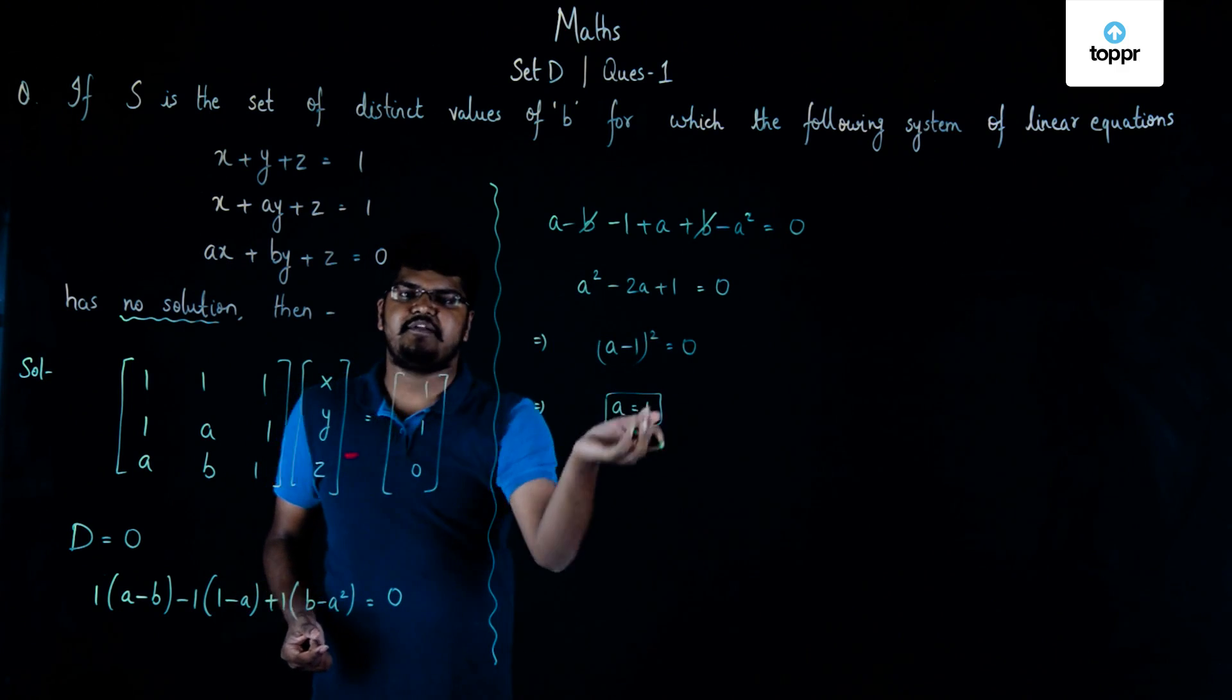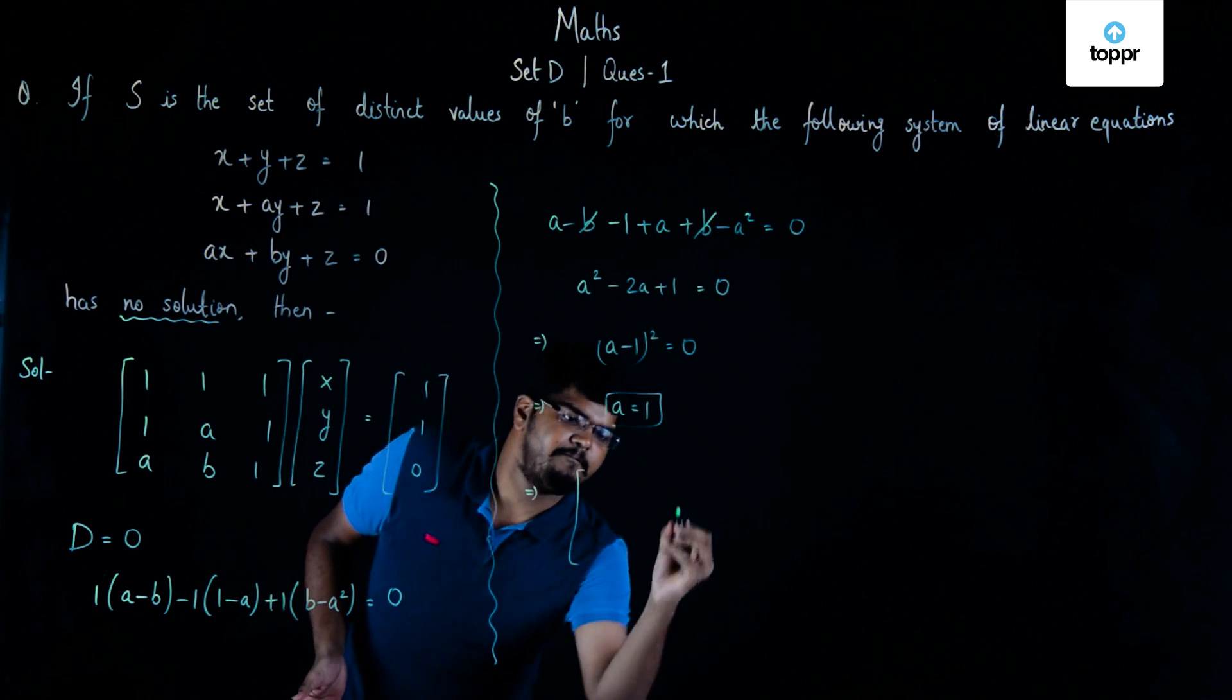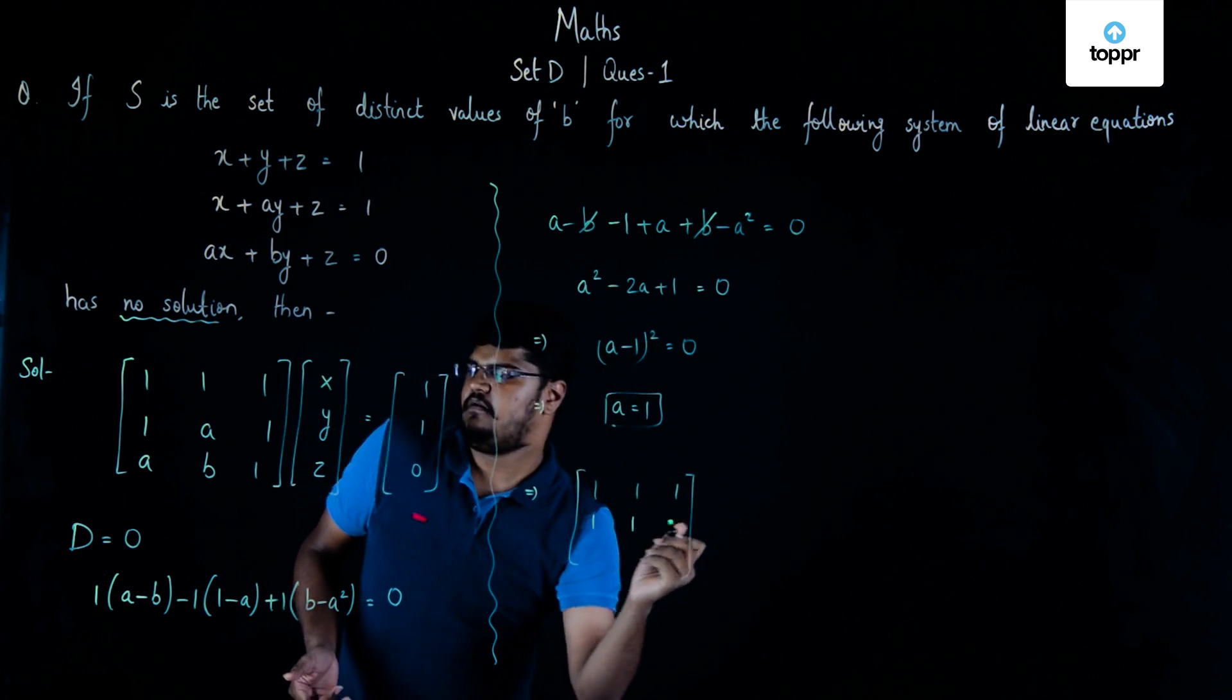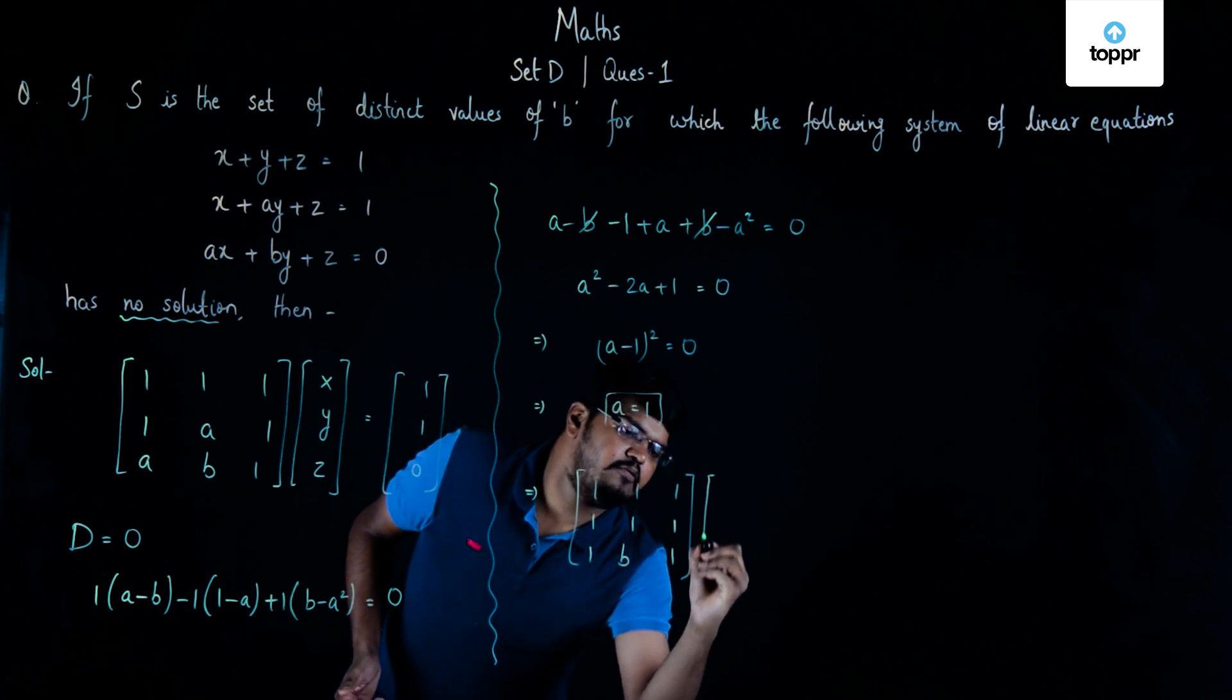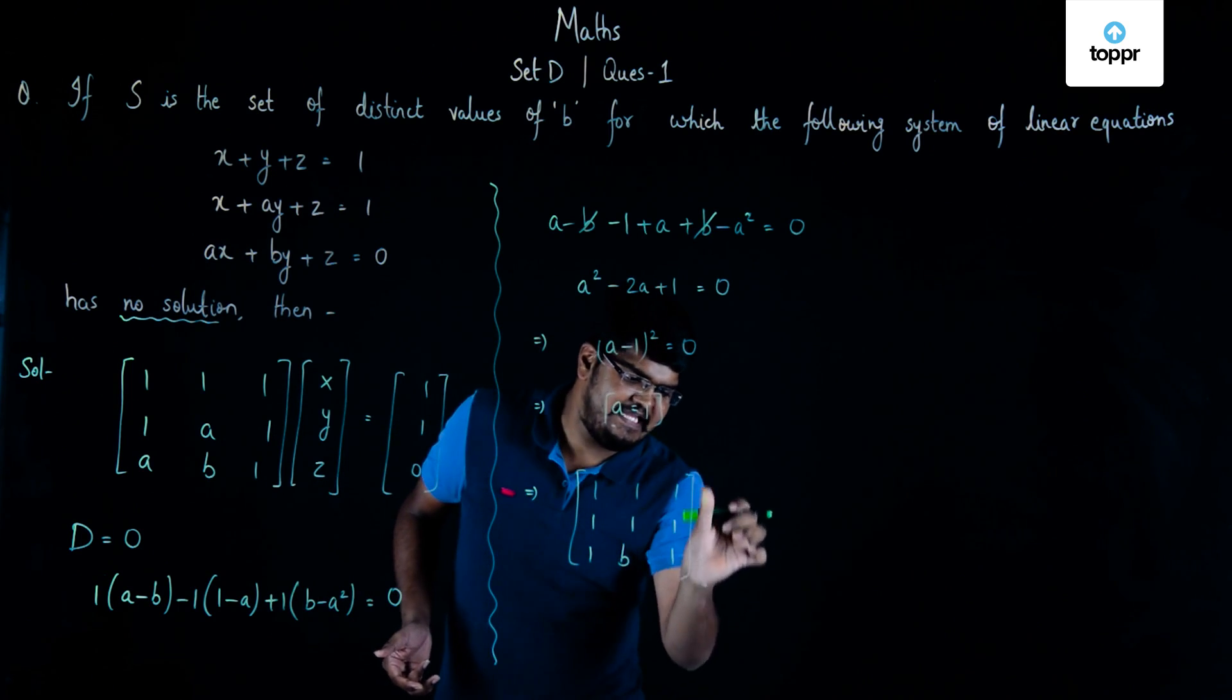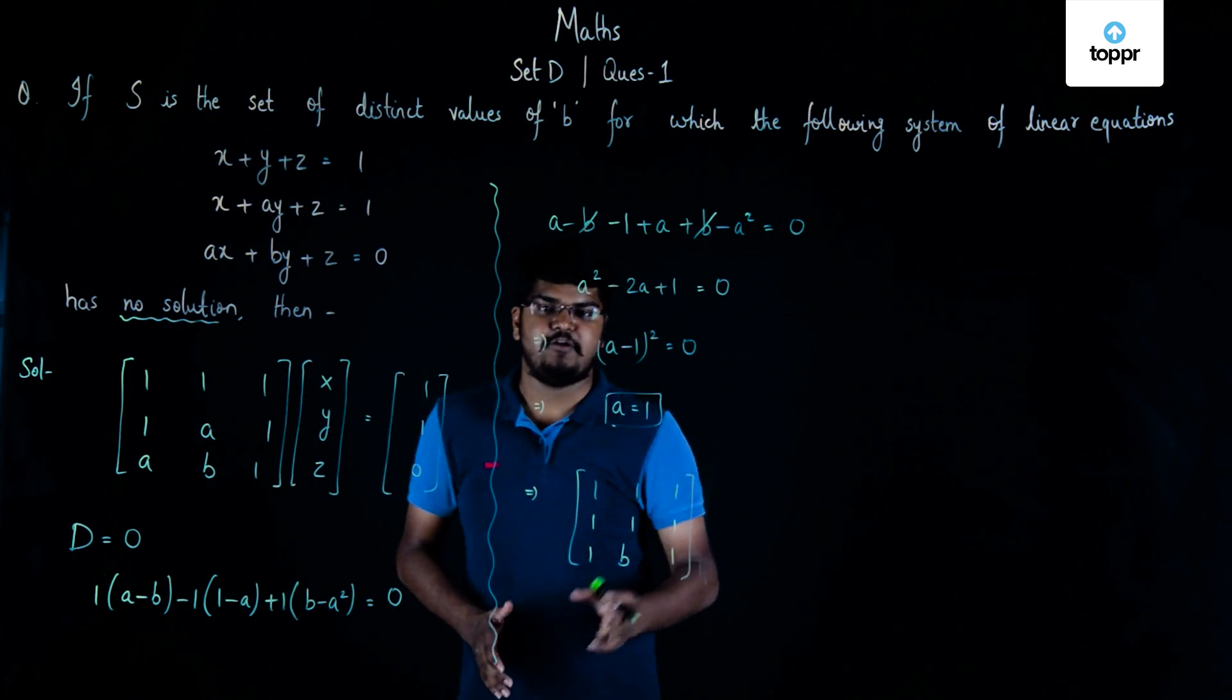Now, if we substitute the value of A as 1 in this particular matrix, then the given system will become 1, 1, 1, 1, 1, 1, then 1, B, 1. Let's now simply see for what value of B this particular determinant will be 0, or the determinant of this particular matrix will be 0.